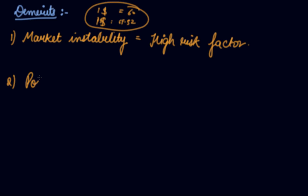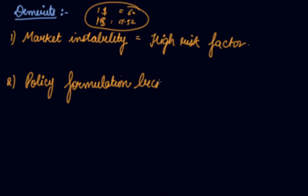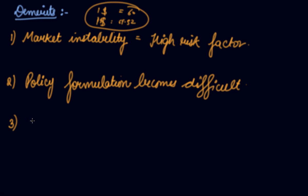The second demerit is that policy formulation becomes difficult. If your foreign exchange rate is not stable and it keeps on fluctuating every minute, then how will you form policy? So policy formations become very difficult in that case, and entering into trade agreements becomes difficult.